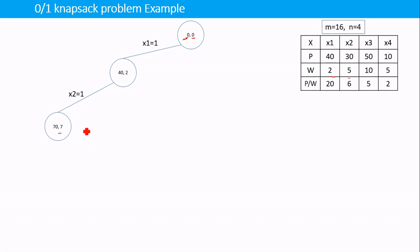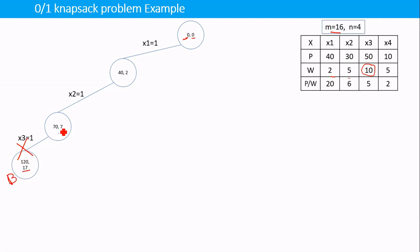With capacity 16 and current weight 7, we have 9 units remaining. If we try to add x3, its available weight is 10, so 10+7=17, which exceeds the knapsack capacity of 16. We cannot add x3, so we kill this node — there is no point exploring it further. We backtrack from this point and set x3=0. Before doing so, we use the bounding function to check whether setting x3=0 will yield a better profit.